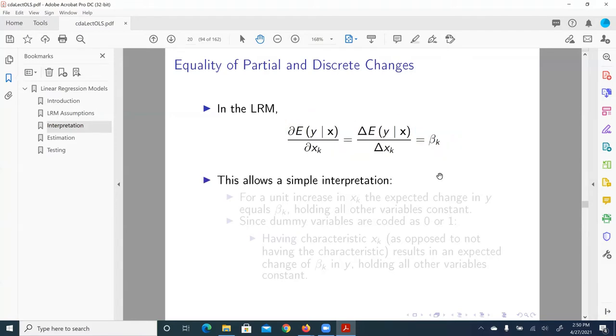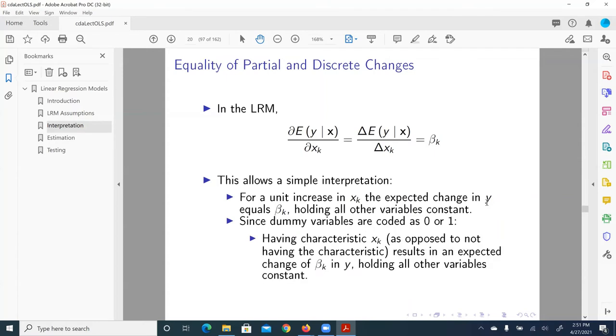And this allows a pretty simple interpretation. What is that? For a unit increase in x_k, a generic variable x_k, the expected change in y equals beta_k, holding all other variables constant. And here, of course, we can flesh out interpretations by adding more details about what x_k is, what y is. And sometimes the predictors are dummy variables. So the interpretation is going to become having characteristic x_k, let's say gender or race, as opposed to not having that characteristic, is going to result in an expected change of beta_k in y, holding all other variables constant.